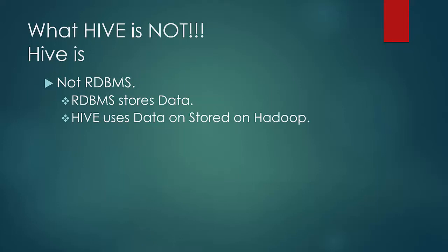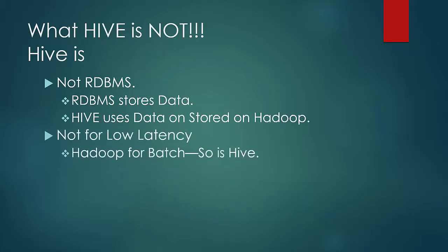RDBMS stores data, whereas Hive uses data which is already stored on Hadoop and does not store actual data. RDBMS supports both OLTP and OLAP transactions, whereas Hive is for online analytical processing. Hive is traditionally used for large-scale volumes and is best suited for data warehouse applications where there is no need for real-time responses to queries.